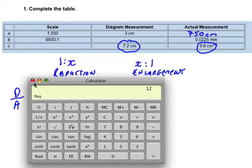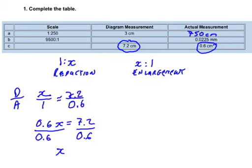And that comes out to be 12. So that means our scale then is 12 to 1. So what we're doing here is we're taking an object and we're drawing it 12 times larger than it actually is.